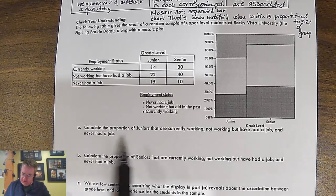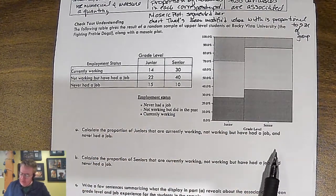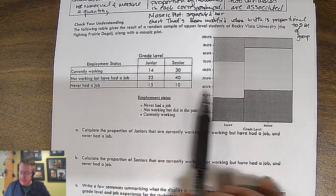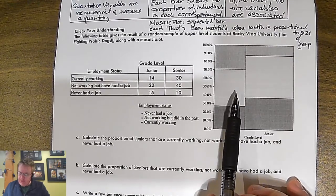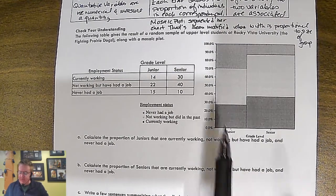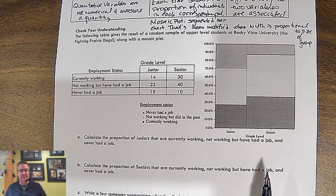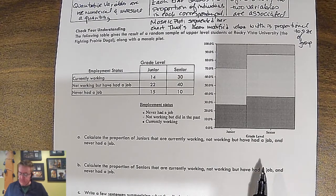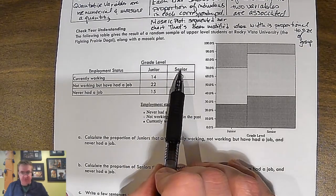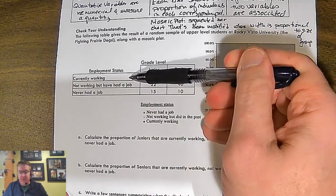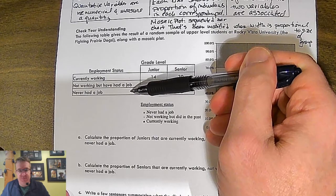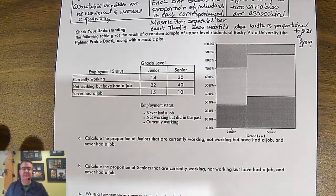Okay, so down here, we've got our two-way table. And this is all about people who, random sample of upper-level students at Rocky Vista University, who are the Frighting Prairie Dogs. I told you it was a good name, along with the mosaic plot. And so they took the juniors and seniors at the university and they said, are you currently working? You're not working, but you've had a job before and you've never had a job.